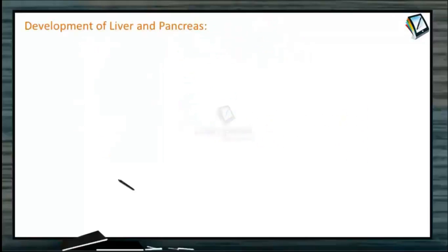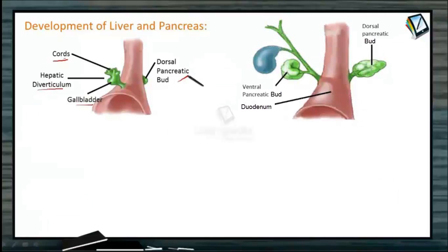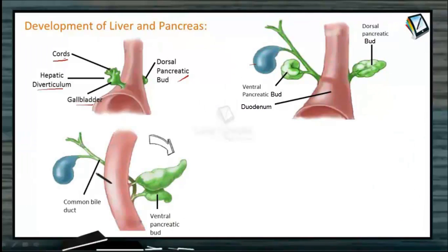Let us see the development of liver and pancreas. In the embryonic stage, the liver arises as a hepatic diverticulum containing several small buds, and the gallbladder arises as a small pear-shaped outgrowth. On the other side, a dorsal pancreatic bud arises. Later, the pancreatic bud grows into the pancreas, while the gallbladder becomes pear-shaped. The pancreas and liver ducts join together to form a hepato-pancreatic duct.